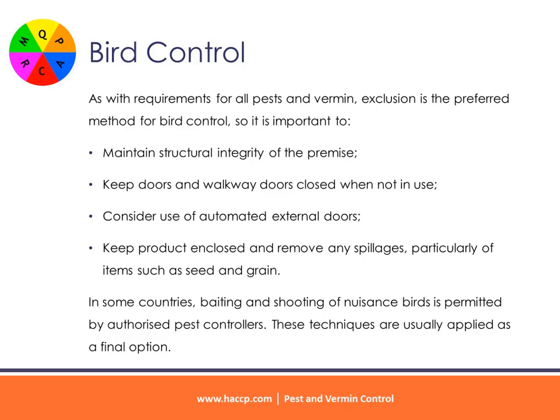Bird Control. As with requirements for all pests and vermin, exclusion is the preferred method for bird control, so it is important to maintain structural integrity of the premises. Keep access doors closed when not in use. Consider use of automated external doors. Keep product enclosed and remove any spillages, particularly of items such as seed and grain. In some countries, baiting and shooting of nuisance birds is permitted by authorized pest controllers, and these techniques are usually applied as a final option.